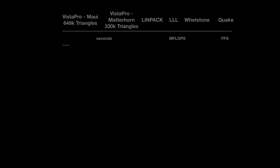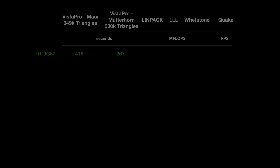Let's look at the first contender, the IIT 3C87 coprocessor. It rendered Maui Island in 416 seconds and Matterhorn in 267 seconds. For the synthetic tests, Linkpack returned 0.41 megaflops, LLL returned 0.47, and Whetstone reported 0.57. Quake ran at an abysmal but doable 1.5 frames per second.